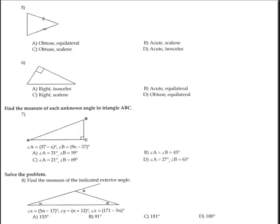Okay, number 5 and number 6 is also classification. Classification is obvious that this is isosceles. We have two sides equal to each other. And the angle is acute. This is acute isosceles, option D. Isosceles and acute.